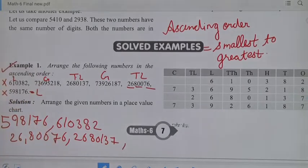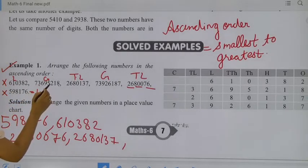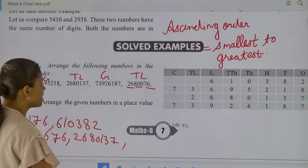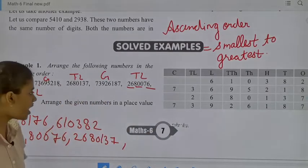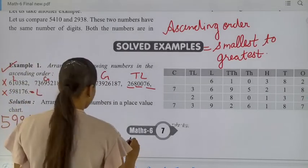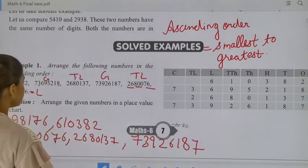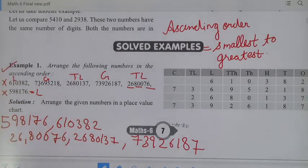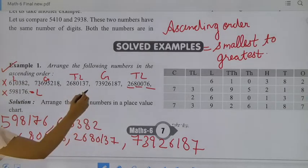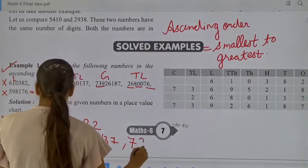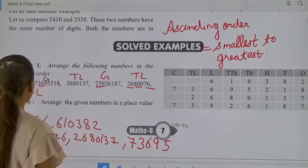Now we move to the crore range. The smallest number in the crore range — we have to check. That is 7,36,95,218. And here we compare: this one has 95 and the other has 92. So the next number is 7,39,26,187. We check: this is 7 crore. Here is 39 and here is 36. So the smallest number is 7,36,95,218.